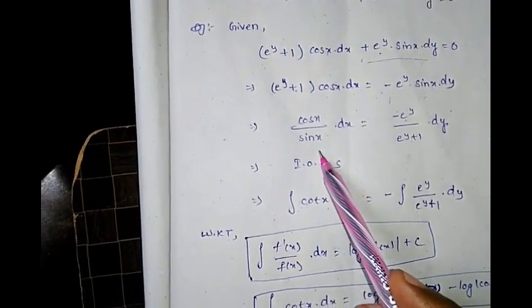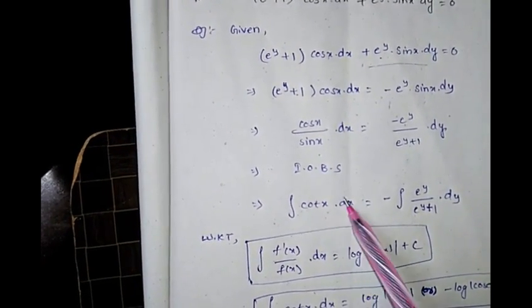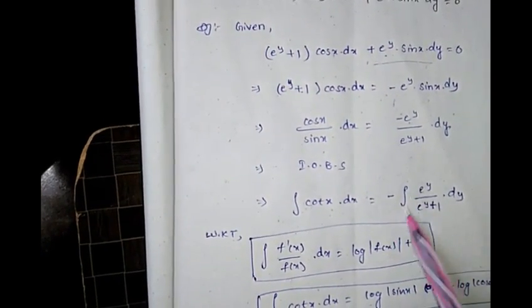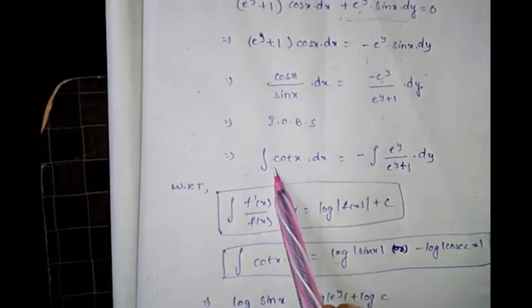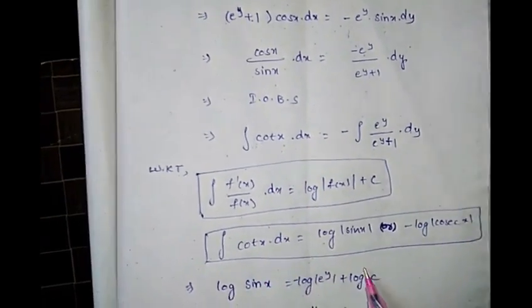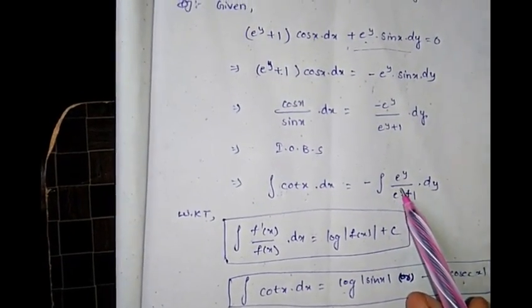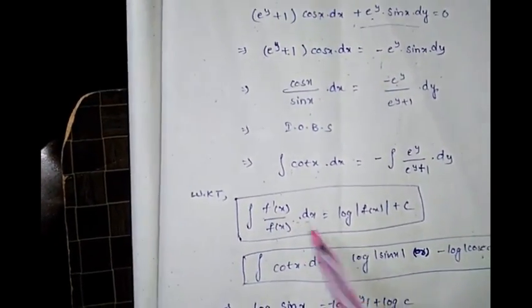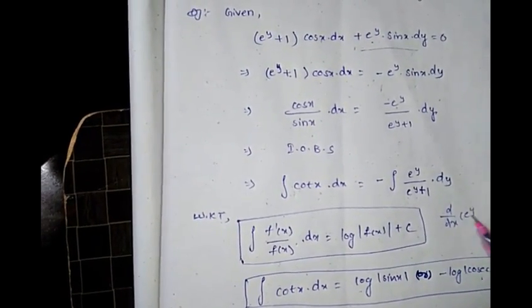Using trigonometric formulas, cosx/sinx = cotx. So ∫cotx dx = −∫eʸ/(eʸ+1) dy. The integral of cotx is log|sinx|. The right-hand side uses the formula ∫f'(x)/f(x) dx = log|f(x)|.